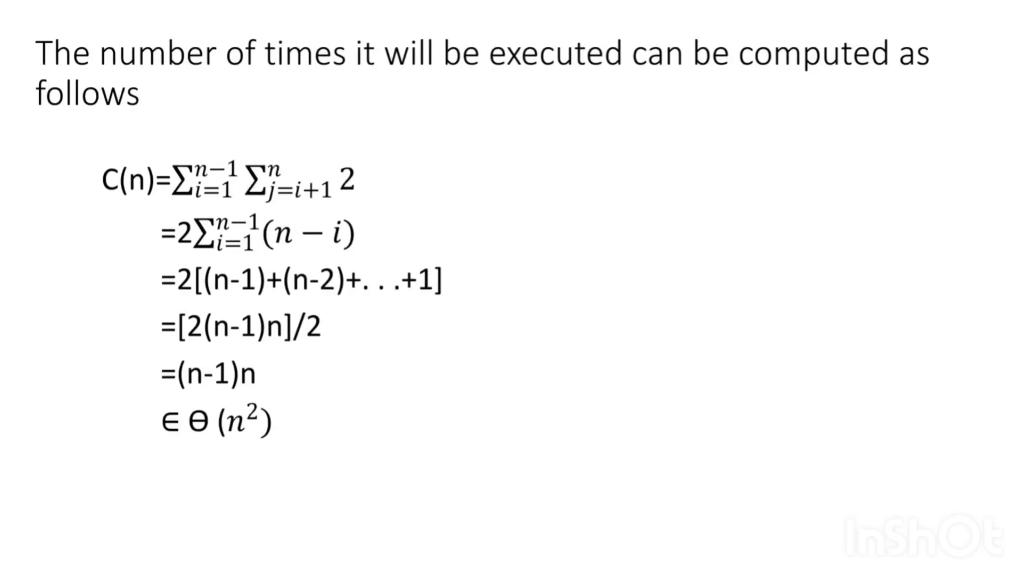The number of times the time complexity for the closest pair is calculated as follows. C of n is equal to summation i equals 1 to n minus 1, summation j equals i plus 1 to n, 2. Now we are taking the constant 2 outside.